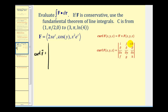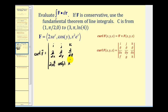So the first row would be i, j, k. The second row would be from del, or the partial derivative operator. The third row is from the components of vector field F. So here's our three-by-three determinant, and to evaluate this I'm going to use the diagonal method — copying column one and column two to the right.